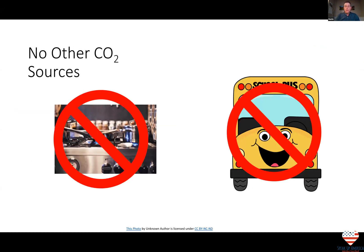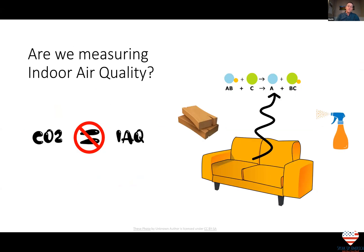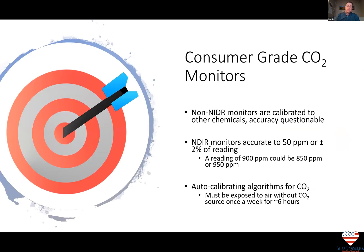If we want to use CO2 as a ventilation indicator, we need to make sure there are no non-human sources that would impact concentration, such as indoor combustion or vehicles idling outside near indoor air intakes. It's also important to note that CO2 is only a proxy for human emissions and does not account for many other things that impact indoor air quality. Consumer-grade CO2 monitors have limitations. Non-NDIR sensors can have errors depending on their calibration. Although NDIR sensors report values to three significant digits, they're only accurate to about 50 ppm. All sensors can drift over time, so it's important to measure the difference between indoor and outdoor CO2 concentrations, as that gives the most accurate and reliable data.